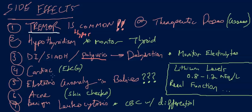Number four is cardiac symptoms — monitor EKG. Number five is Ebstein's anomaly in babies — lithium cannot be given in the first trimester due to this risk, but the second and third trimesters are okay. Number six is acne — check the skin. Number seven is benign leukocytosis — check a CBC with differential occasionally. Also always check lithium levels since it has a narrow therapeutic index (ideal: 0.8–1.2 mEq/L), and monitor renal function.